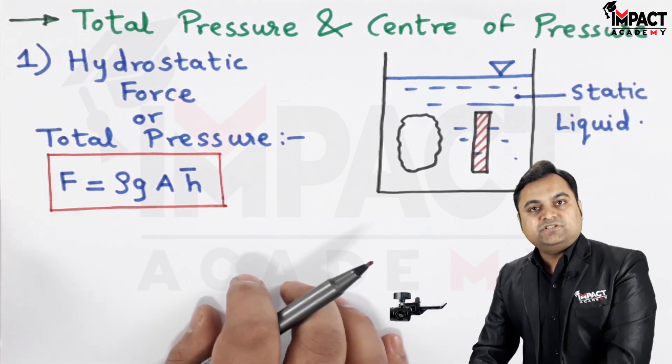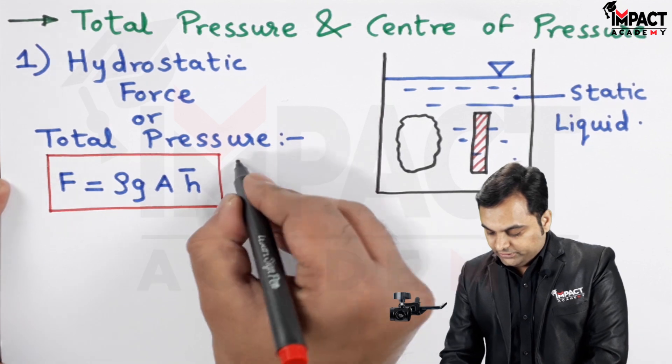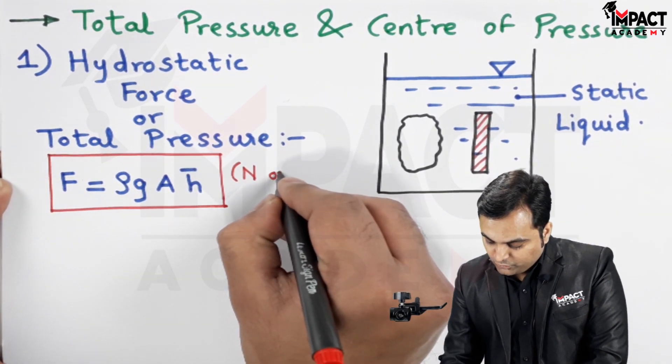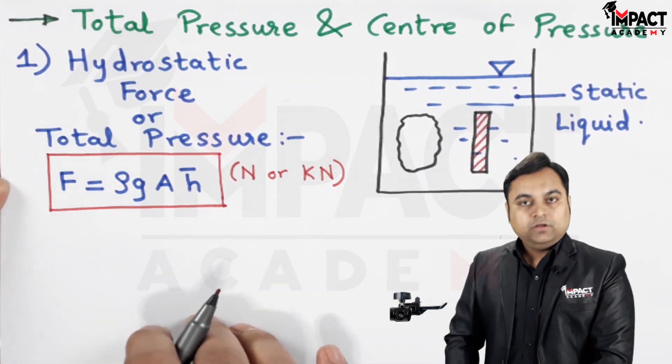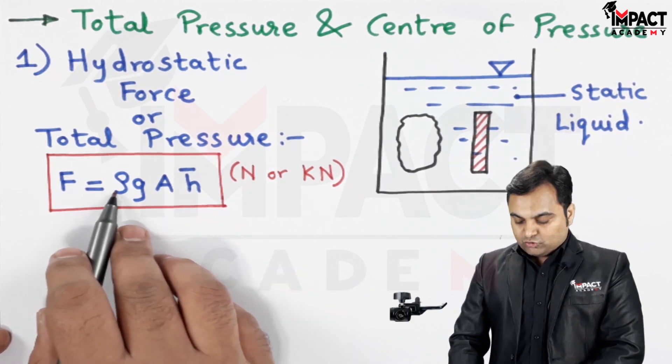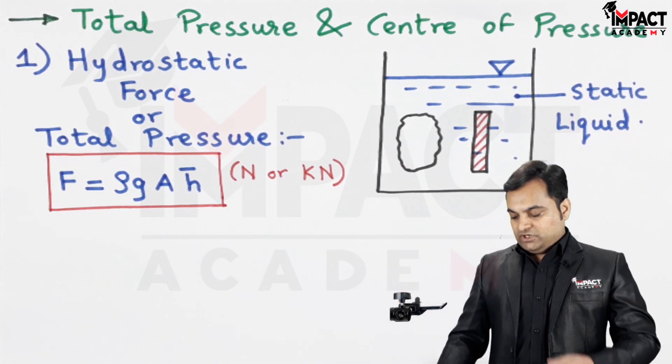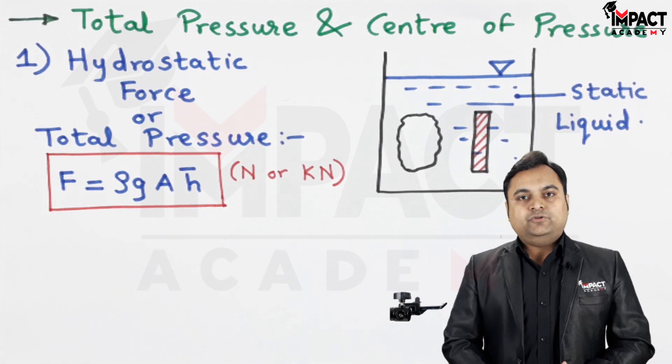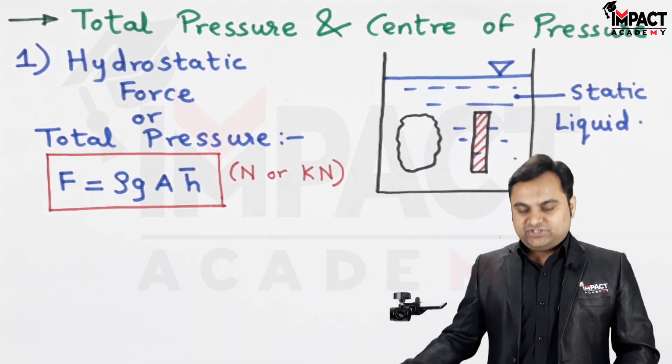This is the formula for the total pressure or hydrostatic force and since it is force the unit would be either in terms of Newton or it can be in terms of kilonewton. The formula is rho g area into h bar where rho is the density of the fluid, g is acceleration due to gravity having constant value 9.81, capital A is the area of this plate called as the cross section area.